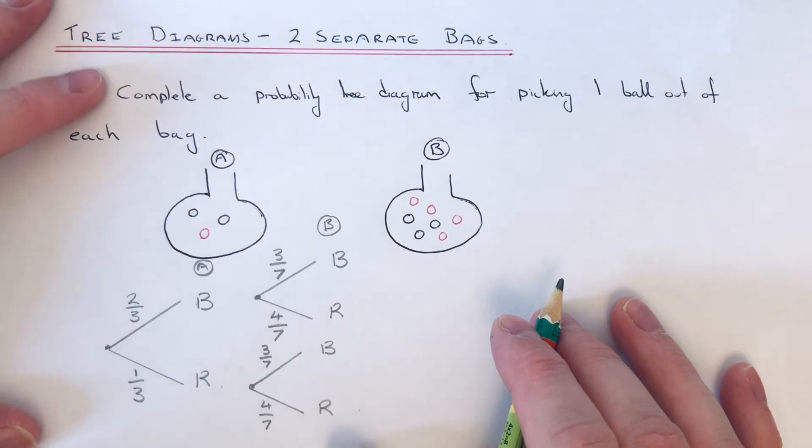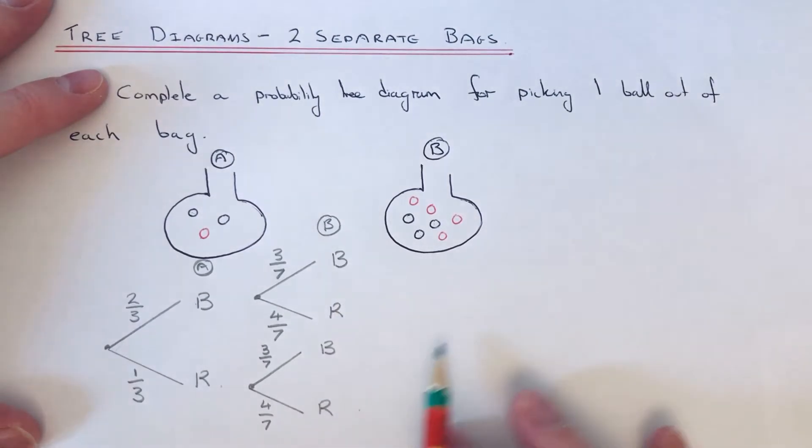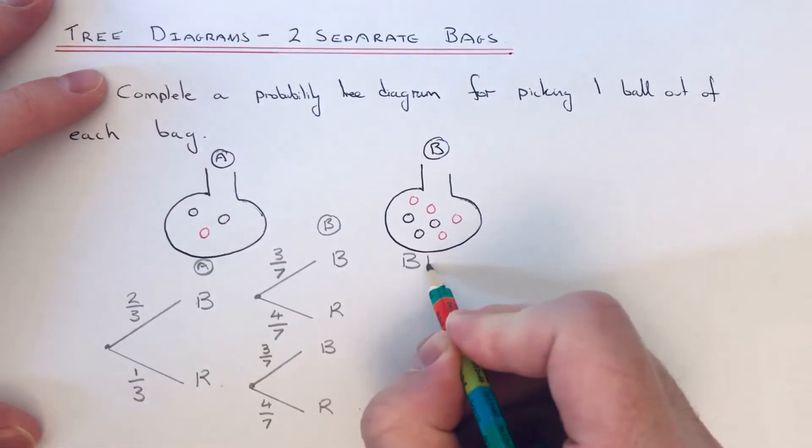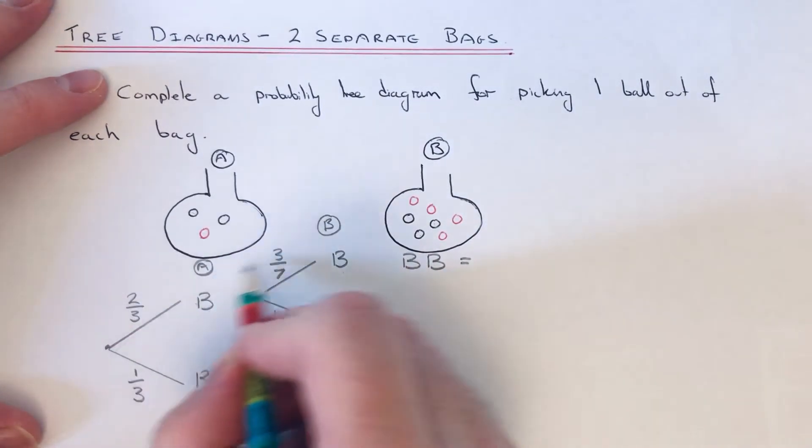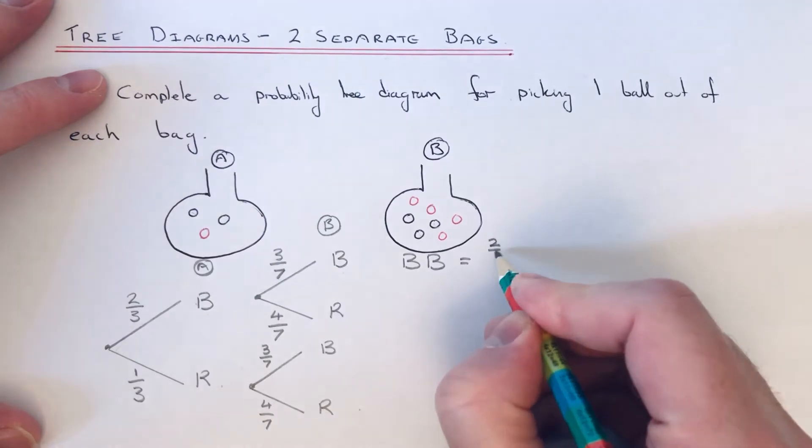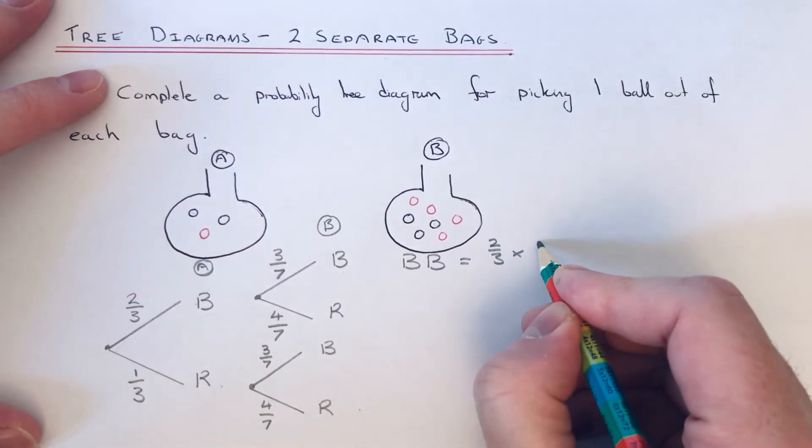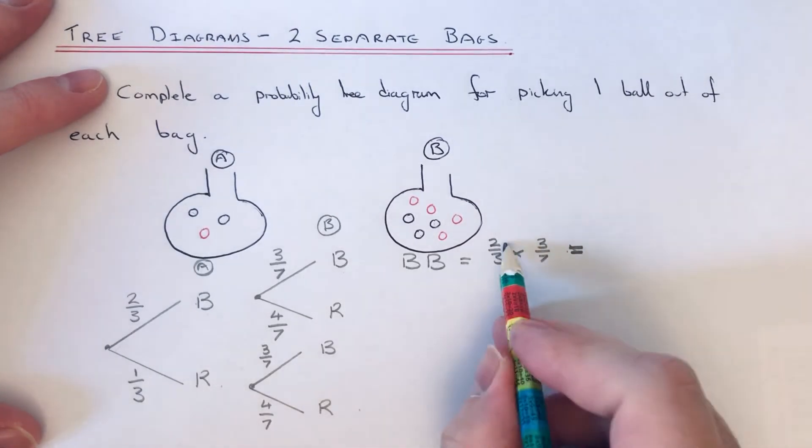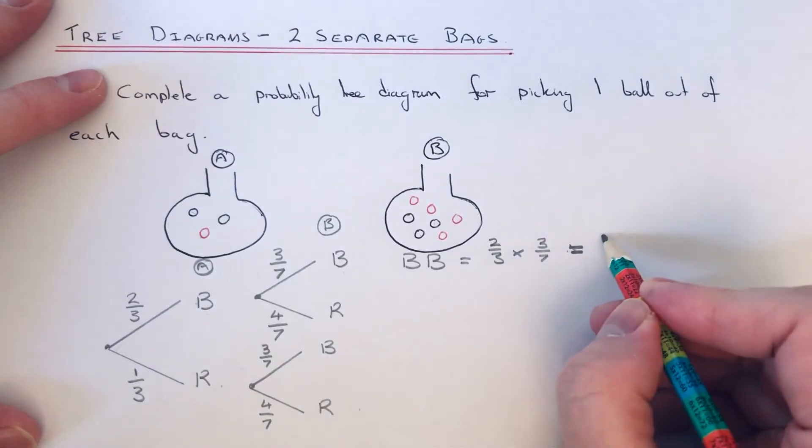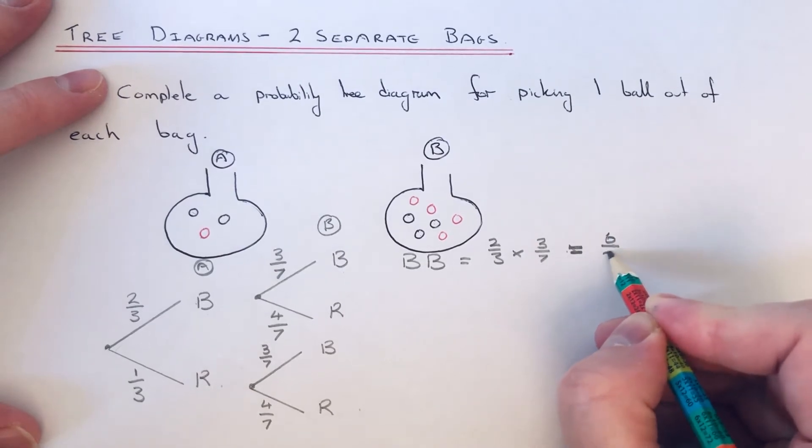Sometimes you need to work out the outcomes that you can have and the probabilities, so let me do that as well. If you follow the top route, you can pick out a black out of bag A and a black out of bag B, so that's one outcome. And if you want the probability of it, you just have to times these two fractions together. So you do two thirds times three sevenths. If you multiply fractions, just multiply the top numbers and multiply the bottom numbers. So two threes are six, three sevenths are twenty one.